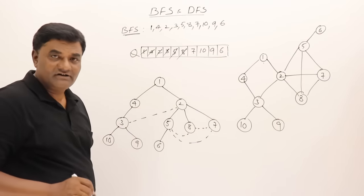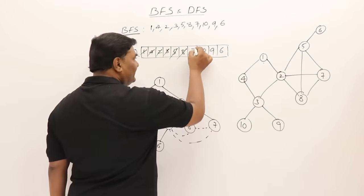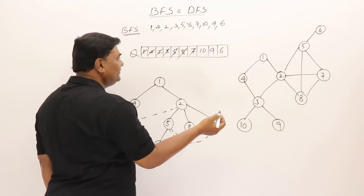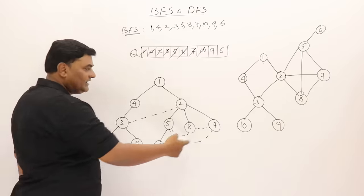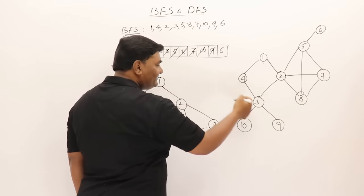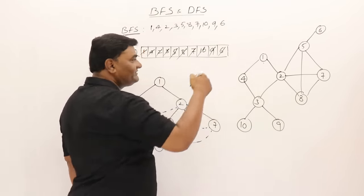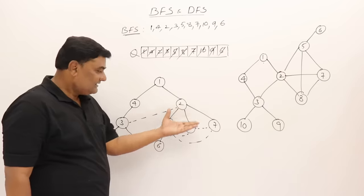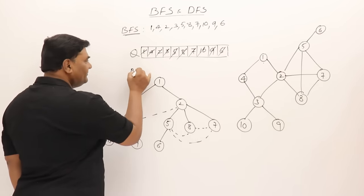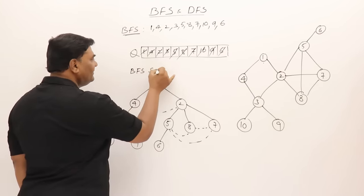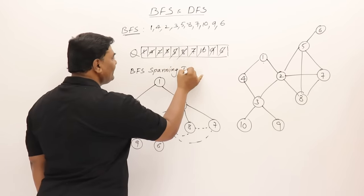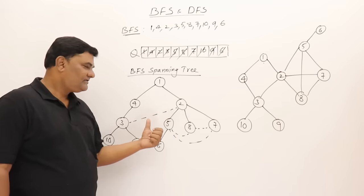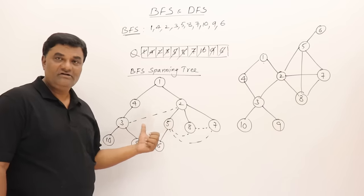Vertices already visited get a dotted line. Next vertex for exploration is 7 — already explored. Then 10 — nothing adjacent. Then 9 — nothing adjacent. Then 6 — nothing adjacent. BFS is now completed. The tree we have built is the breadth first search spanning tree. The dotted edges are called cross edges.